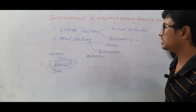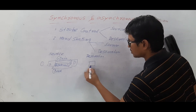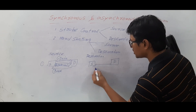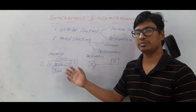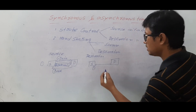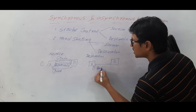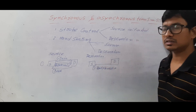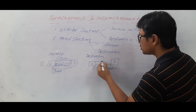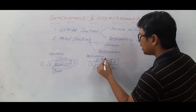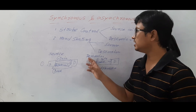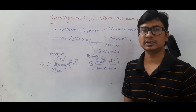In destination-initiated handshaking, the destination first sends a signal to the source indicating it is ready to receive the data, asking the source to please send the data. Then the source sends the data and also sends the 'valid data' signal. This is the destination-initiated handshaking mechanism, compared to the source-initiated handshaking mechanism we discussed earlier.